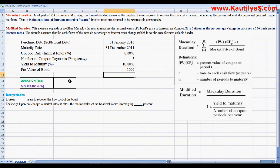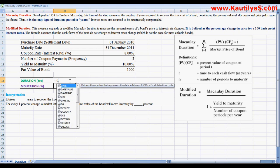Now how we are going to calculate the duration is: equals to Excel function DURATION, D-U-R-A-T-I-O-N.